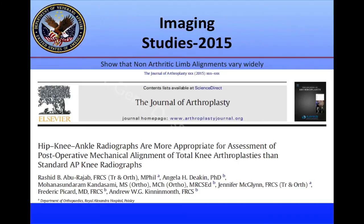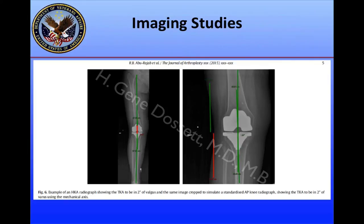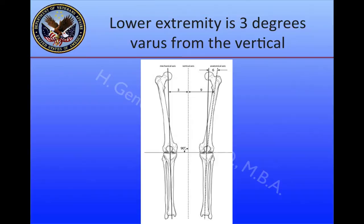There are imaging studies that have helped us understand knee alignment. A recent article entitled 'Hip-Knee-Ankle Radiographs are More Appropriate for Assessment of Post-Operative Mechanical Alignment of Total Knee Arthroplasties than Standard AP Knee Radiographs' showed us that we need to use longer standing films to assess what the alignment is post-operatively. If we take just a smaller segment of that longer x-ray, we can be misled in terms of the alignment.